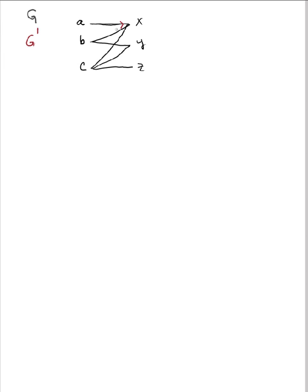Step one is to make a graph G' out of this. The way I make G' is, first of all, to make all my edges directional, and then to create a new node S and put edges from S to every node in my x set, create a new node T, put edges from every node in my y set to T, and then place a capacity of one on every single edge.